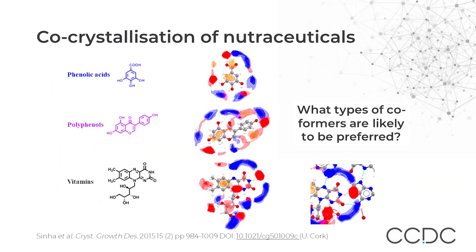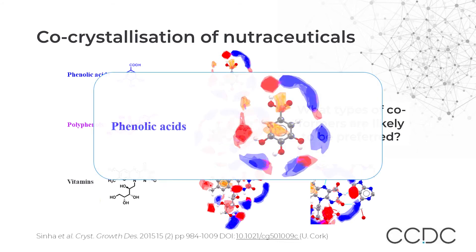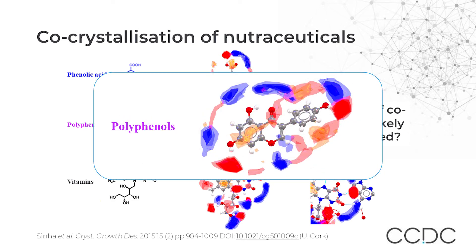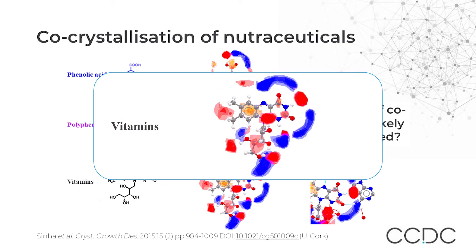For co-crystallization, I'm showing examples of phenolic acid polyphenols and vitamins, and how the FIMs are generated for these. For phenolic acids, the carboxylic acid group usually dominates the interactions — it often forms dimers and the OH groups are available for binding. For polyphenols, there isn't a dominating group; there are a lot of donor preferences, and they are usually seen in solvated forms, primarily hydrates. For vitamins, it's a case-by-case basis depending on the molecule, but it's more likely to see specific patterns such as the riboflavin adenine structure.